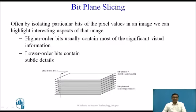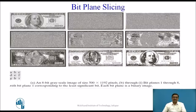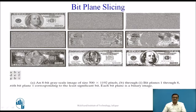By isolating particular bits of the pixel values in an image, we can highlight interesting aspects of that image. Higher order bits usually contain most of the significant visual information, while lower order bits contain subtle, less prominent details. If we represent the image using the least significant bit, we get very little information — the original image content is largely absent.